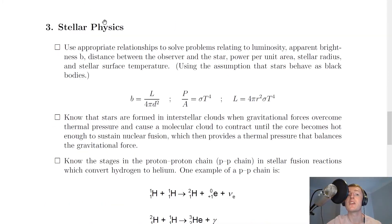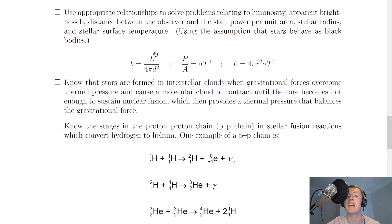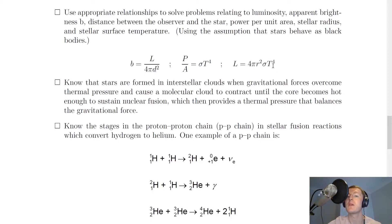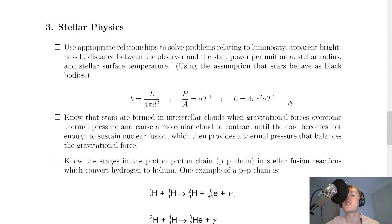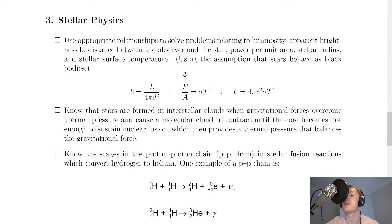Section three is stellar physics. You need to use appropriate relationships to solve problems relating to luminosity, apparent brightness b, distance between observer and star, power per unit area, stellar radius and stellar surface temperature, using the assumption that stars behave as black bodies. The key equations are: b equals L over 4 pi d squared; P over A equals sigma T to the 4 (Stefan-Boltzmann); and L equals 4 pi R squared times sigma T to the 4. You should also be able to explain these properties of stars.